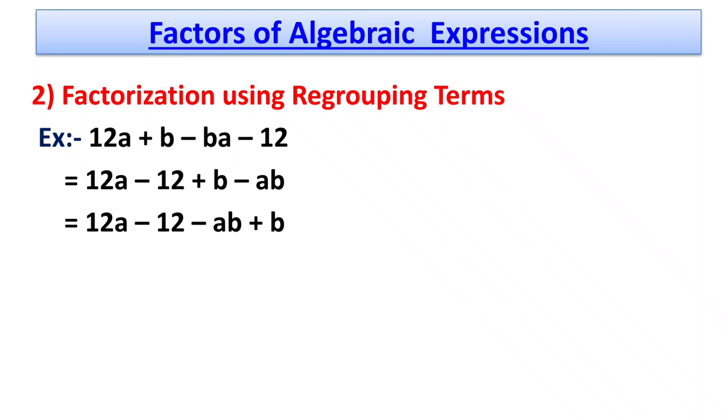From the first two terms, we can take 12 as the common factor. And from the last two terms, we can take -b as the common factor. We write it as 12(a - 1) - b(a - 1).